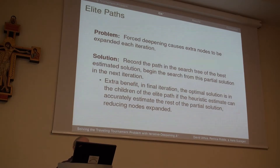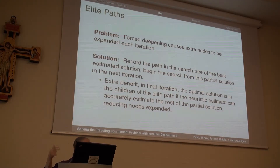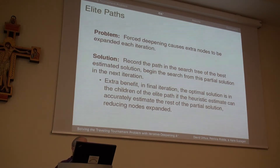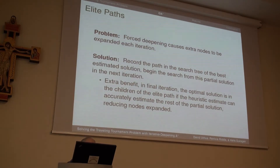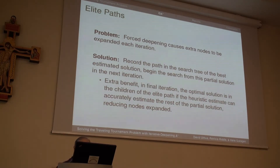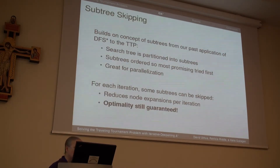The second technique is elite paths. We record the path in the search tree with the best estimated solution, and in the next iteration of IDA* we start from that partial solution. Especially in the last iteration, if the optimal solution is a child of the elite path, we find it quickly. This happens when the heuristic estimate becomes very accurate close to the goal, which many heuristics do, giving us extra performance.